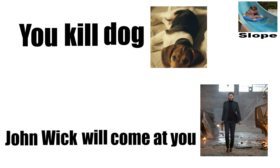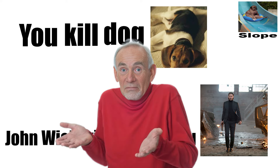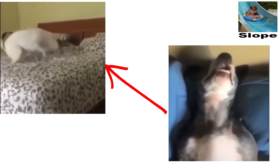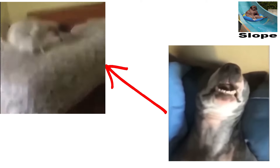Slippery slope. The slippery slope fallacy assumes that one action will lead to a series of other actions resulting in an extreme outcome, without sufficient evidence for such a progression. For instance, if you start letting your dog sleep in your bed, next thing you know, he'll take over your entire house.